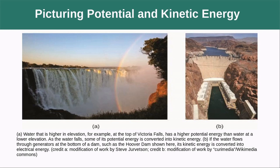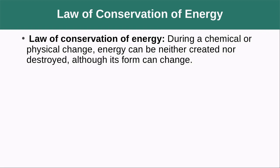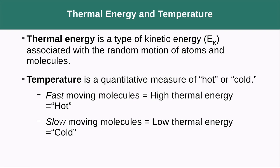One way to picture potential energy is to think about waterfalls. That water has a lot of energy that's released when it drops down, and we can harness that by making dams to turn turbines and produce electricity. Just like we have a law of conservation of mass, there's a law of conservation of energy, which states that during a chemical or physical change, energy is not created or destroyed — it's only moved from one form to another.